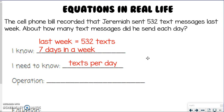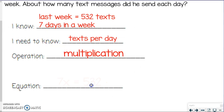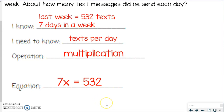Stop and think: what's happening to your variable? You have texts per day, and 'per' should remind you that we are multiplying here. So we are taking our seven days times however many texts he sent per day — which we don't know, so that's our variable X — and that equals 532. The equation is 7x = 532. To find out how many per day we'll divide when solving, but when setting it up, it's multiplication because of that 'per day' language.